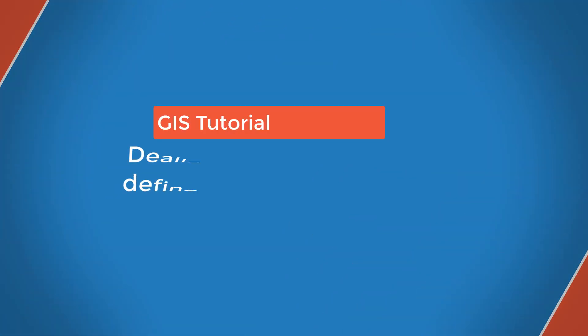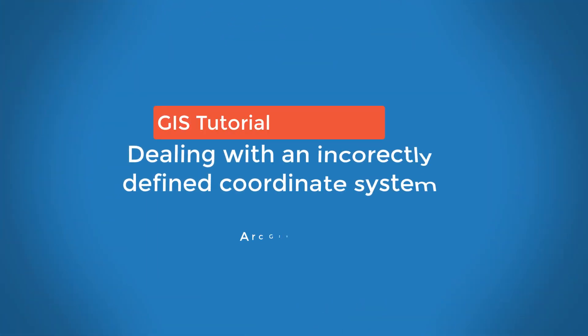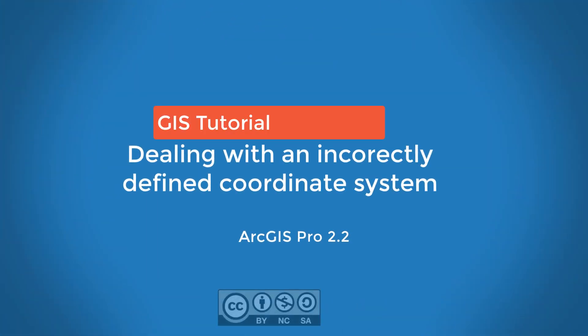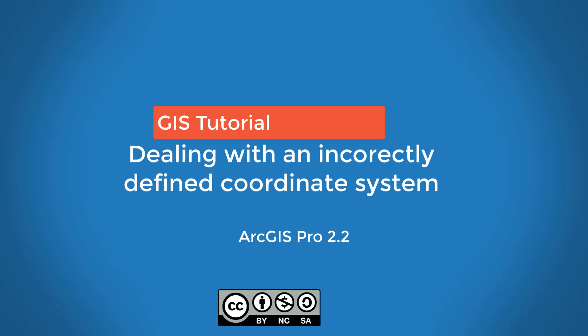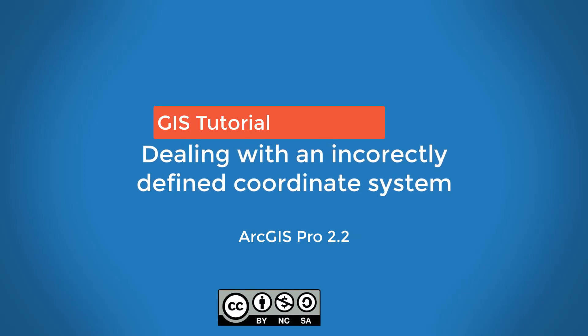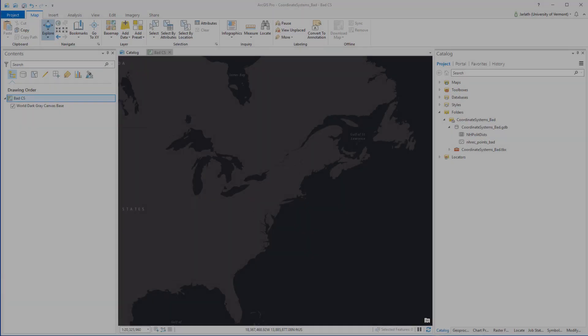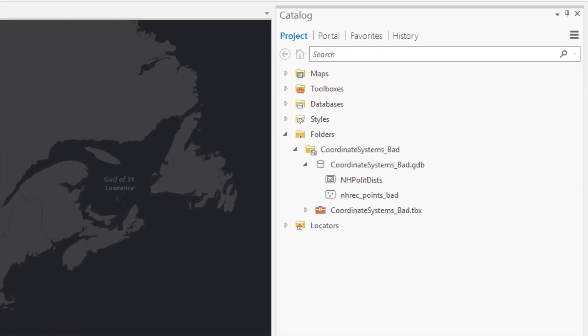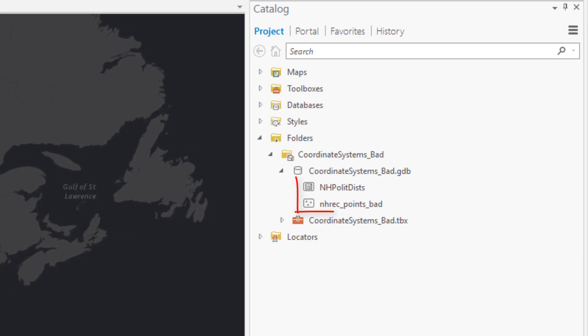This video will show you how to resolve a situation in which you have a vector dataset in which the coordinate system is incorrectly defined. For this example, I'm going to be working with two datasets. One is the New Hampshire political district — this is a dataset I trust, and the coordinate system is defined correctly.